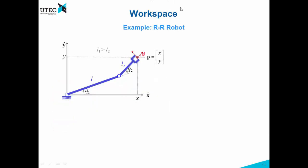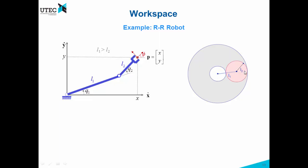Let's see a simpler example — let's consider an RR robot. This is the robot that we have been seeing since forward kinematics, but in this case we are assuming that L1 is greater than L2, as you can see here. So now if you want to see what are the possible points that this end effector — this dot here — can reach, let's suppose that this is completely stretched; if it is completely stretched it will be a complete line, and now let's fix Q1.